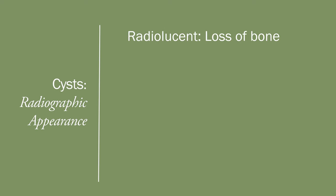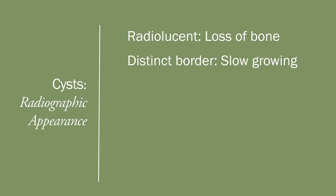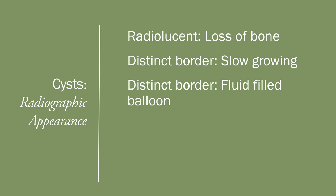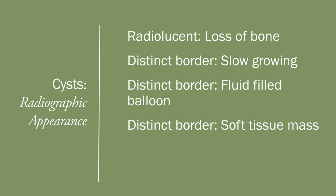On cross-sectional images you may see expansion of the cortical plates, which may become very thin or even perforated. If you see a radiolucency inside the bone, it means there is loss of bone. A radiolucent lesion may be a cyst, a benign tumor, infection, or even cancer. With cancer and infection the border will be irregular. A distinct border means the lesion is slow growing and filled with fluid or soft tissues.